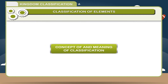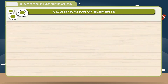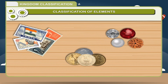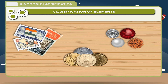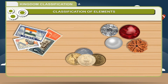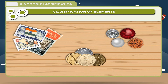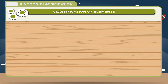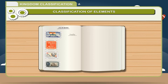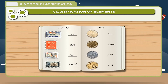Kingdom Classification: Concept and Meaning of Classification. Many of you might have developed a hobby of collecting different things — these may be stamps, coins, or stones. If these things are not kept systematically, it would be difficult to find them when you need. Everybody develops a system to keep them. Stamps may be kept according to the country's name or according to the theme of the picture printed on it. Coins may also be kept country-wise.